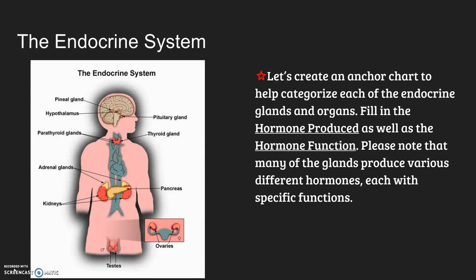This picture is similar to the one in your book, but you need to focus on the one in your book as you're studying for your test because your test will have a diagram that matches the textbook. Make sure you can identify each of the glands. We're also going to create an anchor chart to help you categorize each of these endocrine glands and their organs. In your guided notes, you're going to fill in the second and third column — the hormones produced by the glands and the hormone function, including the target tissue and what it does.